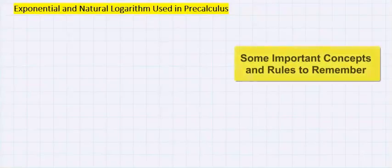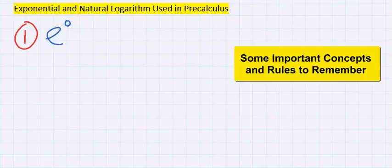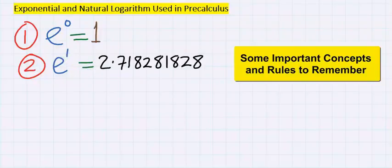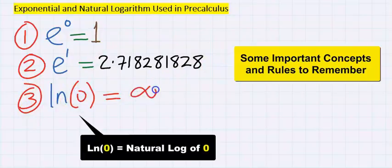Next, finally, let's look at some basic rules and concepts used in natural log and exponential. Number one: exponential to the power of zero is equal to one. Next, exponential to the power of one is equal to this value.